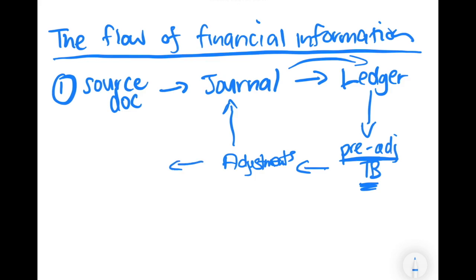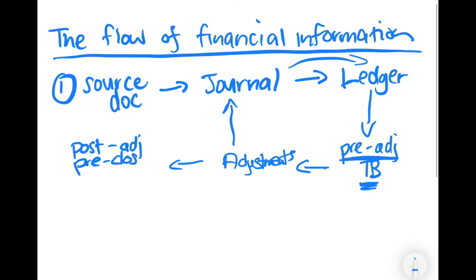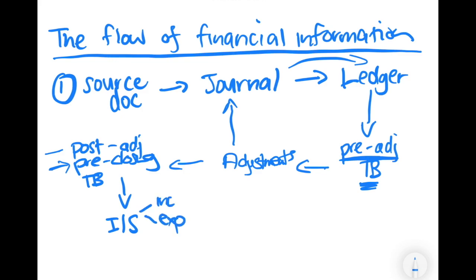After going through this process, we can extract a post-adjustment pre-closing trial balance. We want a post-adjustment pre-closing balance because at this point we are going to prepare our income statement. The pre-closing part means that our income and expenses have not yet been closed off, and the post-adjustment part means we have correctly fixed all of our income, expenses, assets, etc., reflected at the correct amounts.